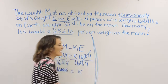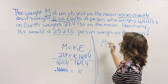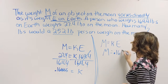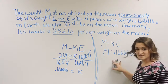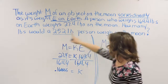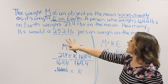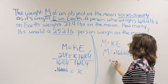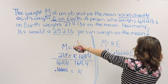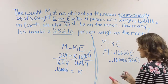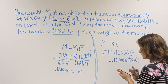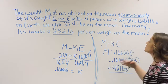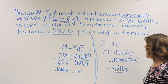Now we rewrite the equation: weight on the moon varies directly as weight on Earth, and we plug in our constant of variation. The question asks how many pounds a 252-pound person would weigh on the moon. So 252 is our E. We multiply 0.1666666 by 252, and that gives us the weight on the moon — I got 42 pounds. So if you weigh 252 pounds on Earth, you would weigh 42 pounds on the moon.